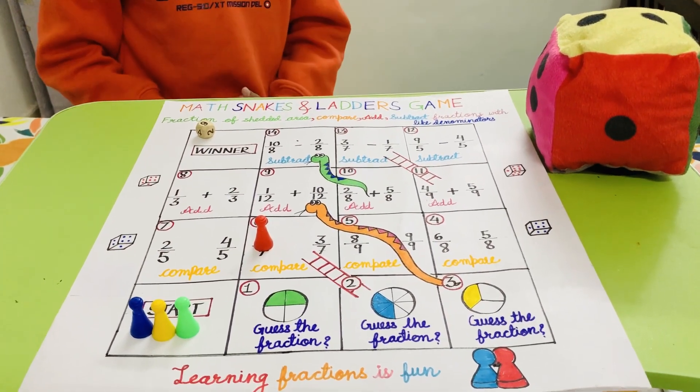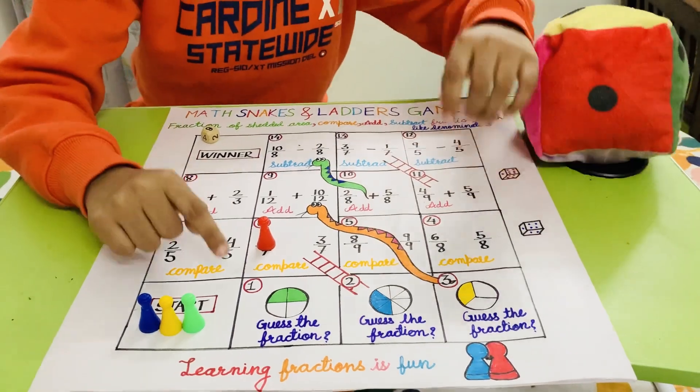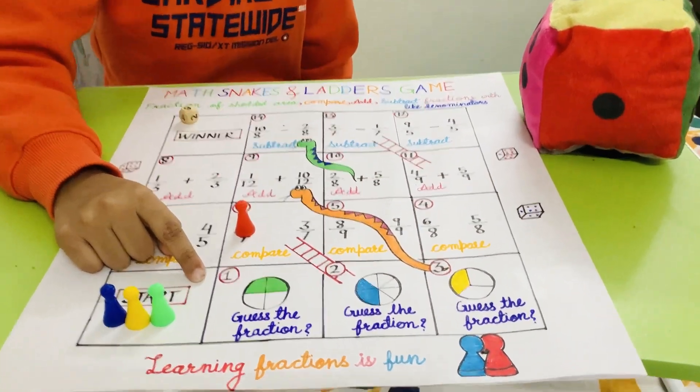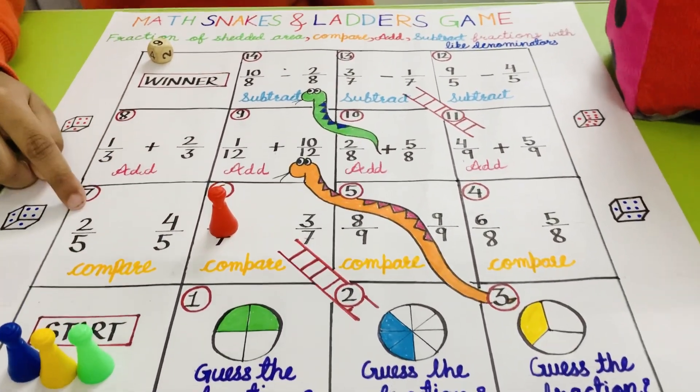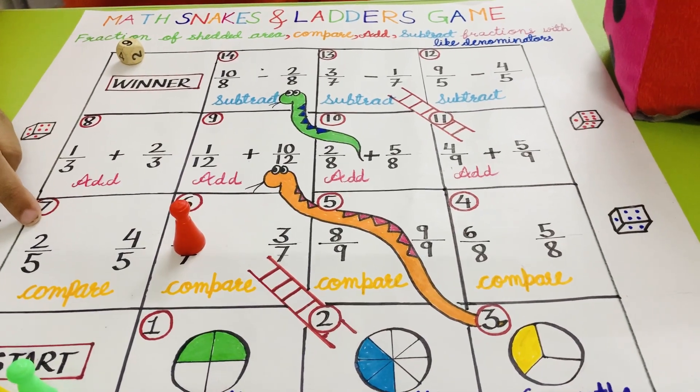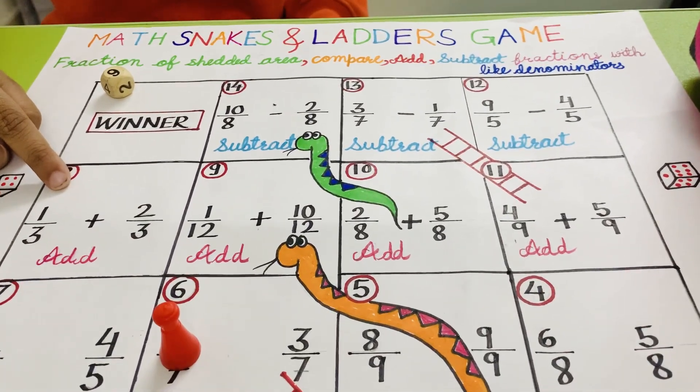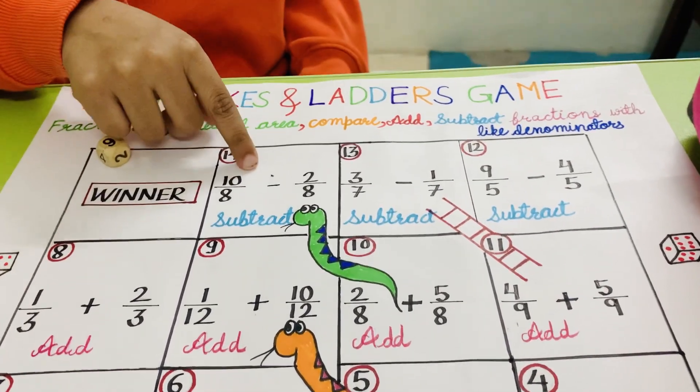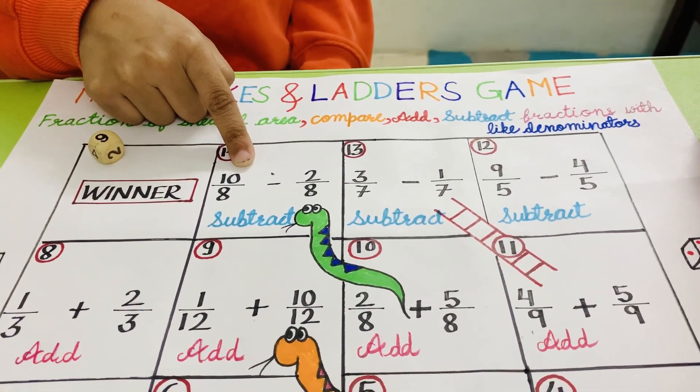The math problems in this game are related to fractions. The first row is to get the fraction of the colored area. The second row is to compare the fraction. The third row is to add the fraction. And finally, the fourth row is to subtract the fraction.